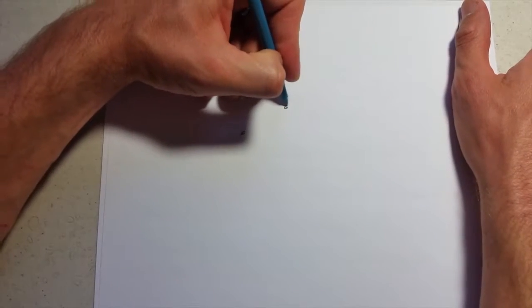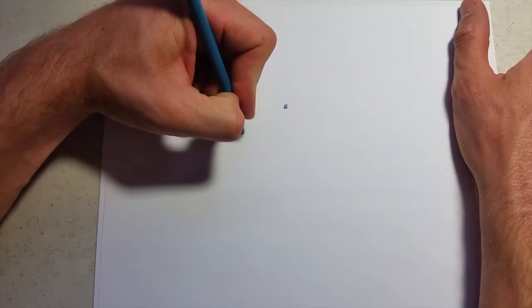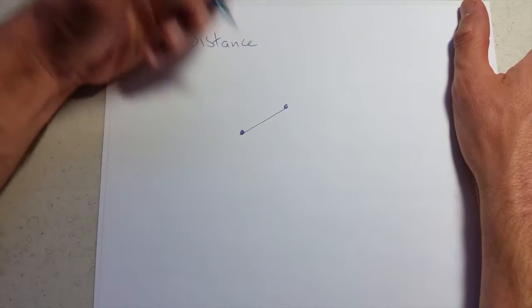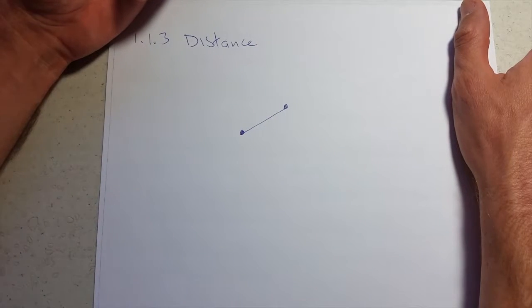The next section is distance, and we're going to be looking at distance in the Cartesian plane between two points. So we have two points, pretty easy to draw that out, just going to pick these two. Now, the distance is the measurement or the length of the line between the two points.